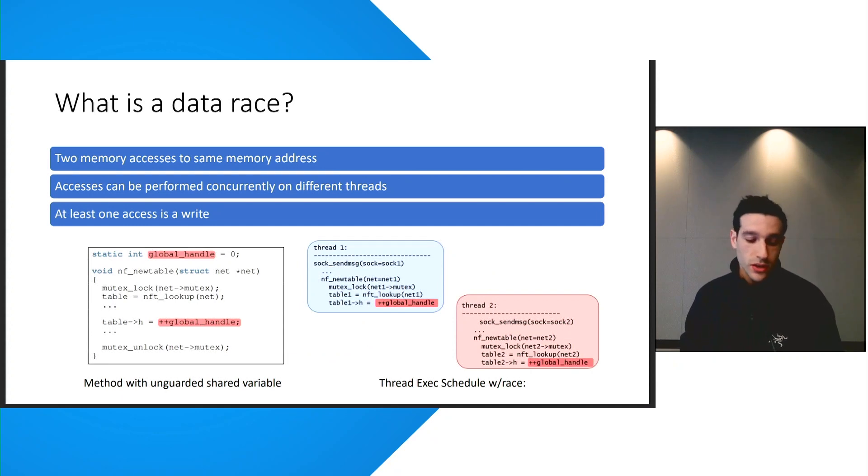So I'll start by defining what a data race is. A data race is a race condition bug with three specific properties. First, there are two memory access operations to the same memory address. Second, these two accesses can be performed concurrently on different threads. And third, at least one of these accesses is a write that can change the value of the memory.